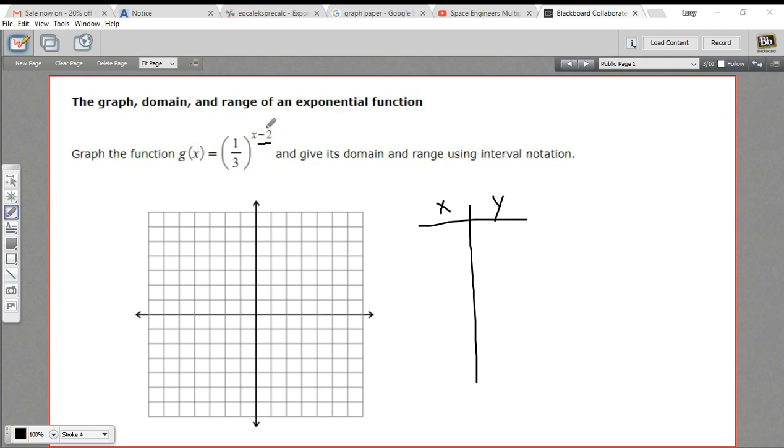So the value for x that would make this equal zero is two. Two minus two is zero. So if I put in a two for x, I've got one-third to the zero power, which is one.